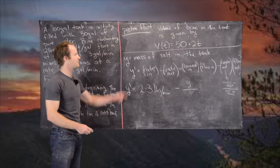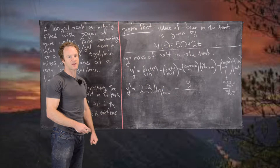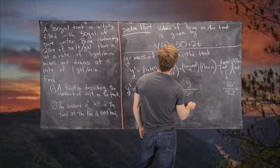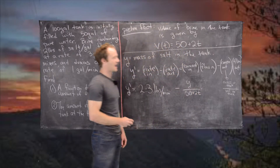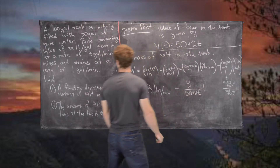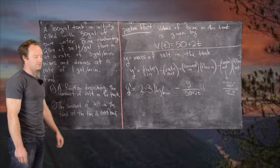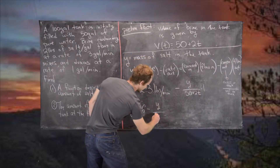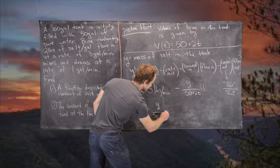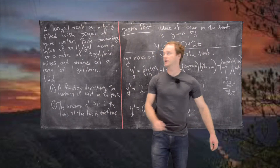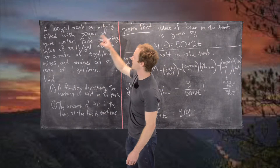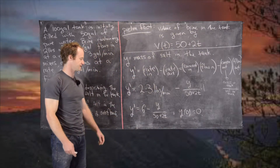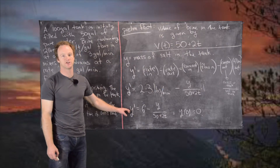The volume is changing, but we calculated it as a preliminary fact, so we write 50 plus 2t. The flow going out is one gallon per minute, so that doesn't change anything. This gives us y prime equals 6 minus y over (50 + 2t). Our initial condition is y(0) = 0, since the tank starts with pure water and no salt. By the bottom of this board we've constructed the differential equation.